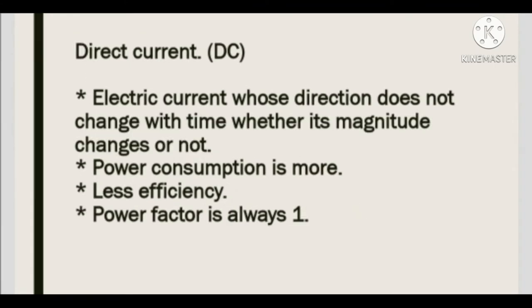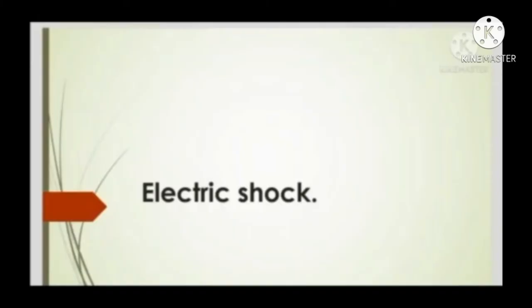Direct current (DC): Electric current whose direction does not change with time, whether its magnitude changes or not. Power consumption is more, efficiency is less, and the power factor is always 1.